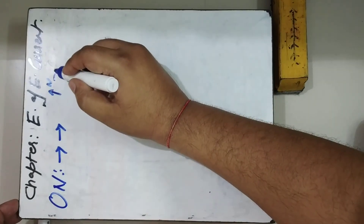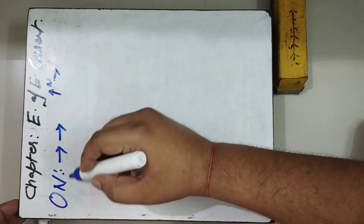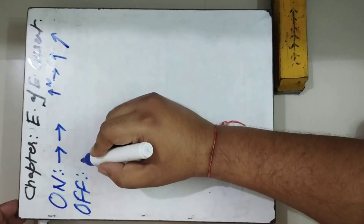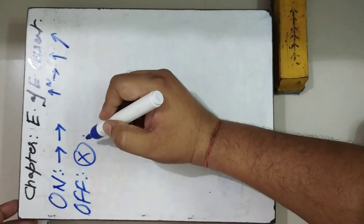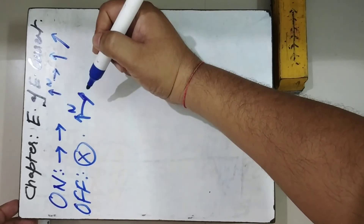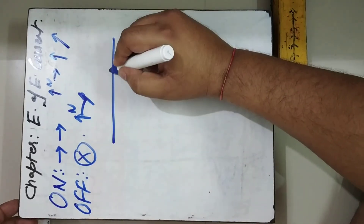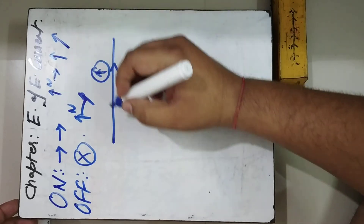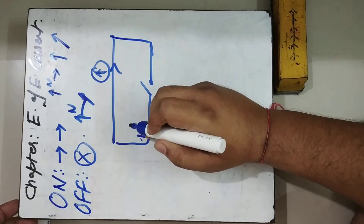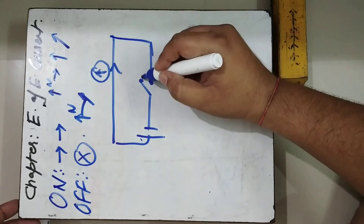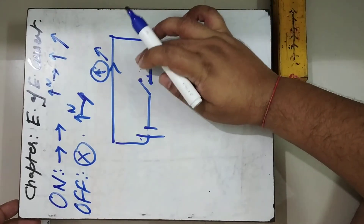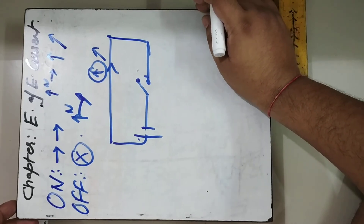As soon as current starts flowing, the magnetic needle immediately deflects. As you can see, when no current is flowing, the needle is in its normal north position. But as soon as the current starts flowing, the needle deflects from its normal position. When the switch is on, the deflection shows one way, and when the switch is off, the needle returns to normal north.